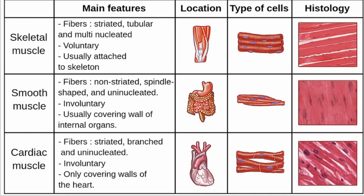Smooth muscle is found in the lining of your internal organs, like your gastrointestinal tract, uterus, blood vessels, eyes, etc. It controls the involuntary contractions in these regions, serving purposes like peristalsis, digestion, vasoconstriction of your blood vessels, and pupil dilation. They contract slowly and automatically, unlike striated muscles — so you're not paying attention to your body when it does these things.